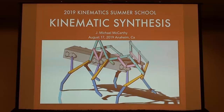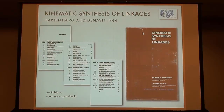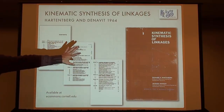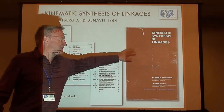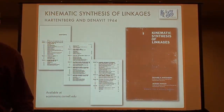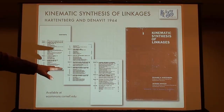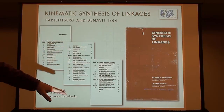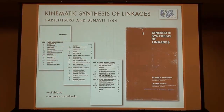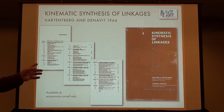When I was in graduate school, this is the book we used: Kinematic Synthesis of Linkages by Hartenberg and Denavit — exactly the Hartenberg and Denavit you know from the Denavit-Hartenberg convention for robotic systems. In fact, they were doing kinematic synthesis of spatial mechanisms in the last chapter of this book using what we now think of as the Denavit-Hartenberg matrix. So this was 1964.